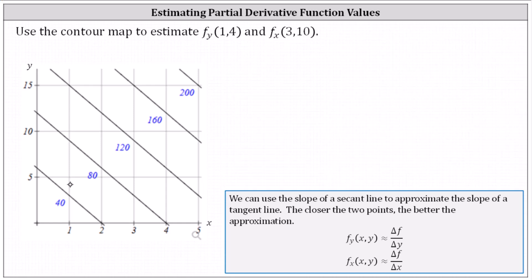The point (1, 4) is approximately here, giving an ordered triple of (1, 4, f). We estimate the function value, which is between 40 and 80, much closer to 40 — let's estimate 48. We then select a second point close to this one so the secant line will be in the y direction. That point has ordered triple (1, 3, 40): the y-value is approximately 3, between 0 and 5 but closer to 5, and the function value is exactly 40.